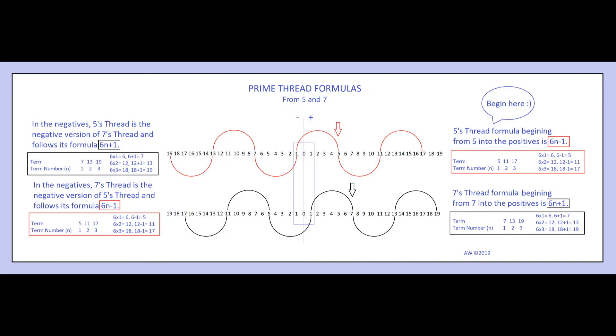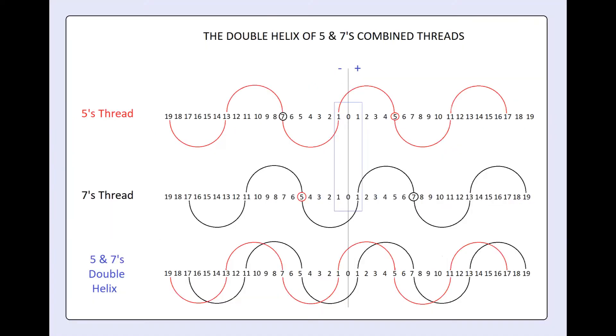For example, the negative side of 5's thread follows 7's formula from the positives, and it consists of the same numbers as well. This inversion is also true for 7's thread. This discovery shows two individual geometric and algebraic threads unify all prime and semi-prime numbers within the structure of a double helix.